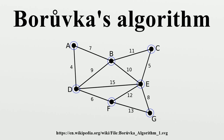The algorithm begins by first examining each vertex and adding the cheapest edge from that vertex to another in the graph, without regard to already added edges, and continues joining these groupings in a like manner until a tree spanning all vertices is completed.